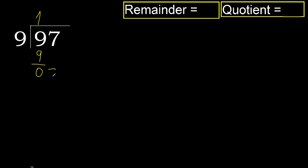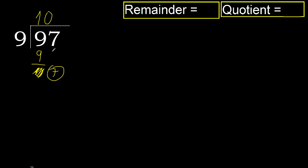Next, bring down the next digit. 7 is less, therefore continue to next step. There is no more number, therefore finish. Complete with 0, because here we finish with this number.